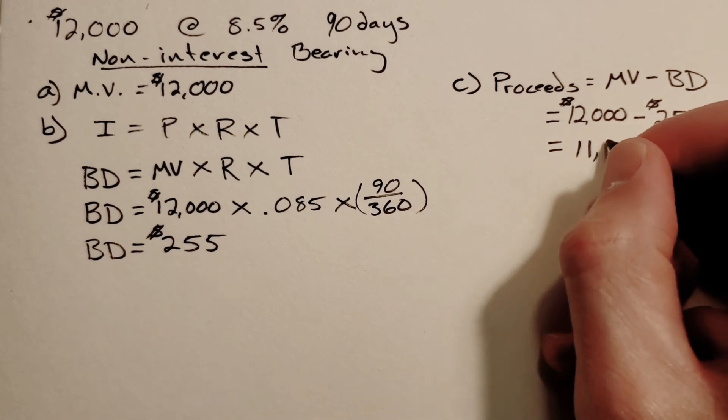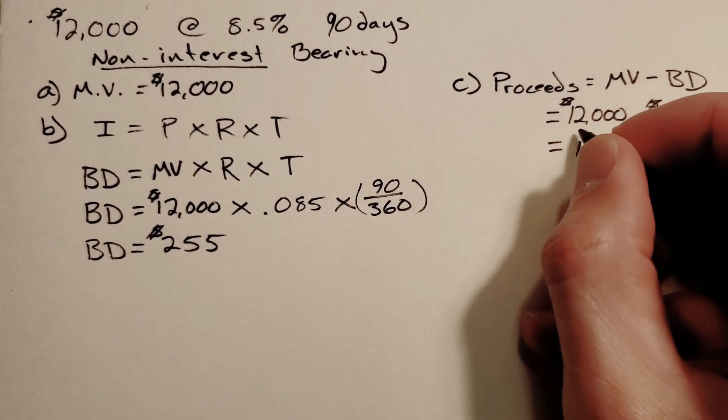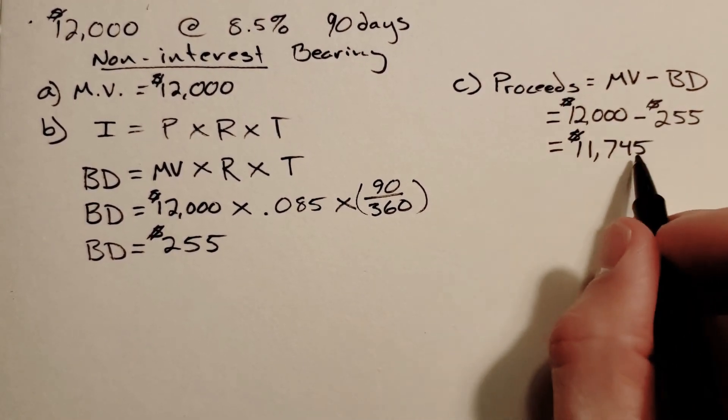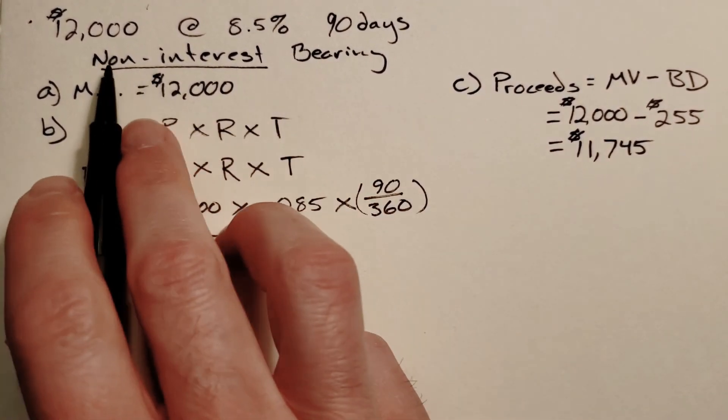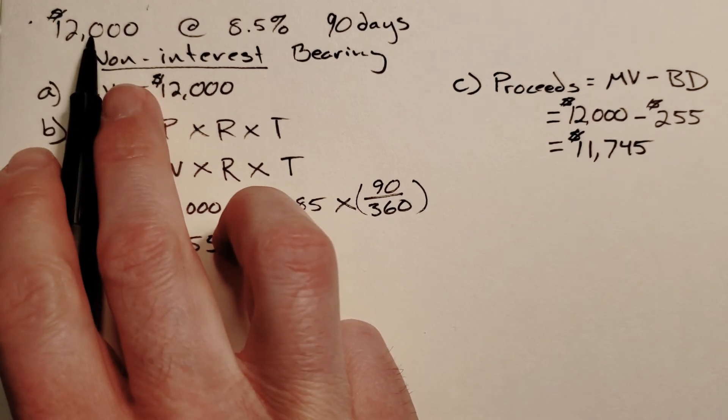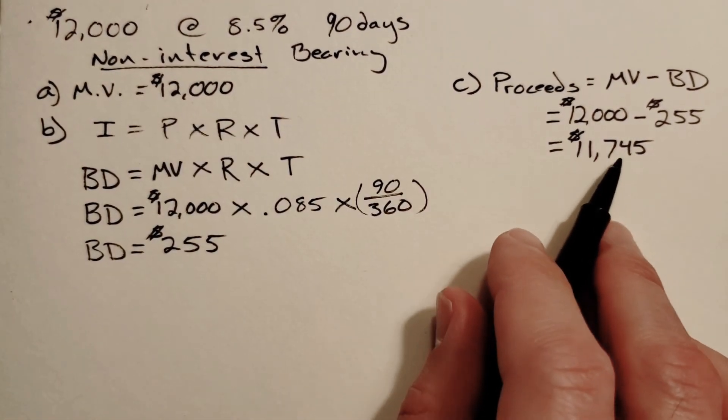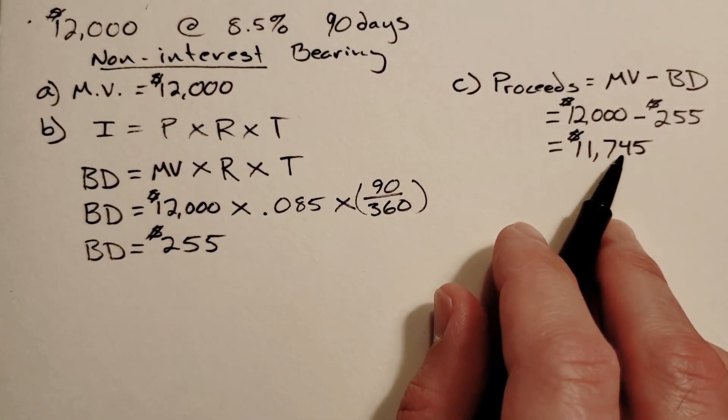Our proceeds equals our maturity value $12,000 minus $255, which comes out to be $11,745. This is the amount you would take home. You go into the bank, you say I want a non-interest bearing loan with these terms. You say you want $12,000, they're going to give you $11,745, but you'll pay back $12,000.